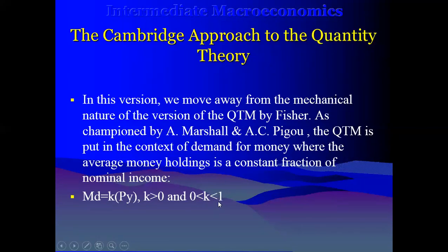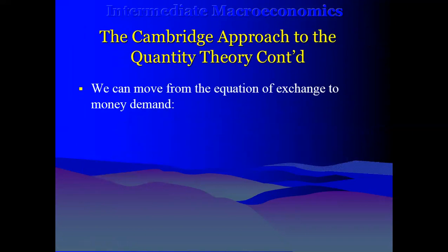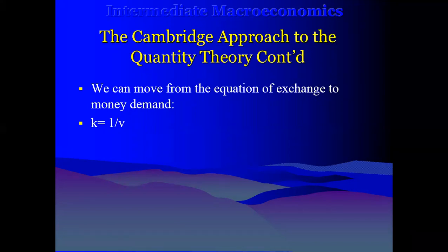K should be within zero and one. So your money demand is solely determined by nominal income. Nominal income is your average or general price level times the output level. What we are trying to do here is move away from the equation of exchange and look at what happens to money demand. The constant K is taken as one over the velocity of money. We just want to get to the intuition of the thing.